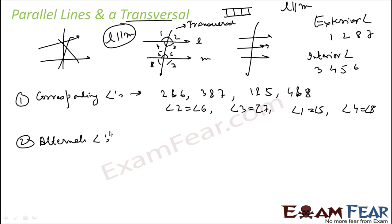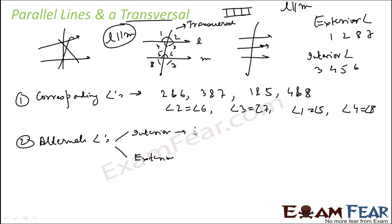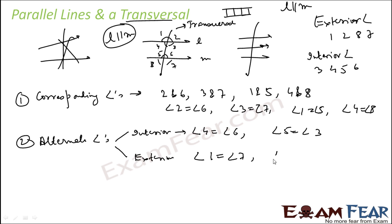Now let's talk about alternate angles. We have alternate interior angles and alternate exterior angles. When we say alternate angles, we typically mean alternate interior angles. The alternate interior angle pairs are angle 4 and angle 6, and angle 5 and angle 3 — they are equal. For alternate exterior angles, angle 1 and angle 7 are equal, and angle 2 and angle 8 are also equal.